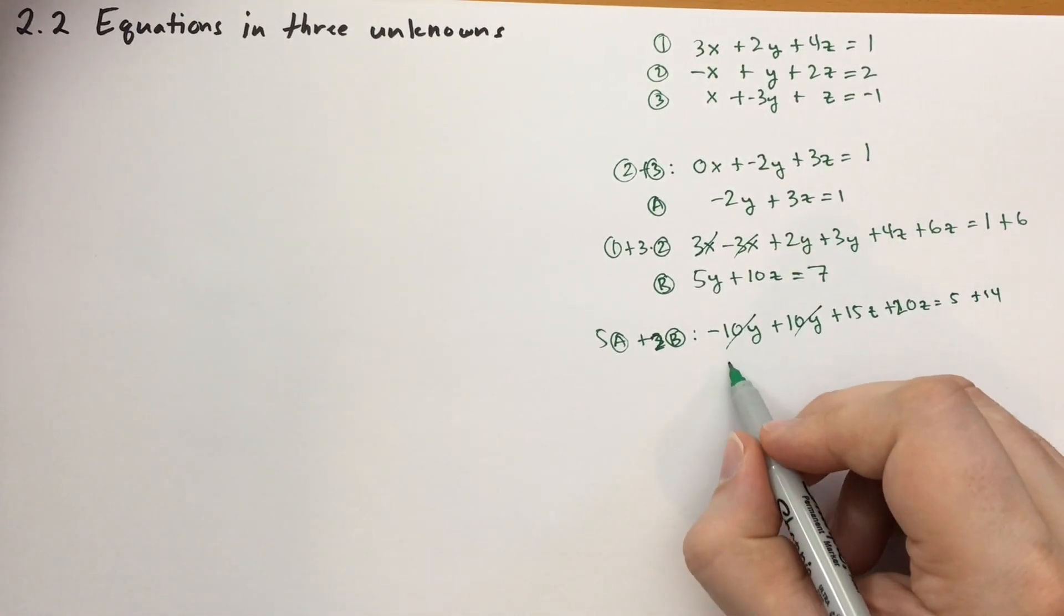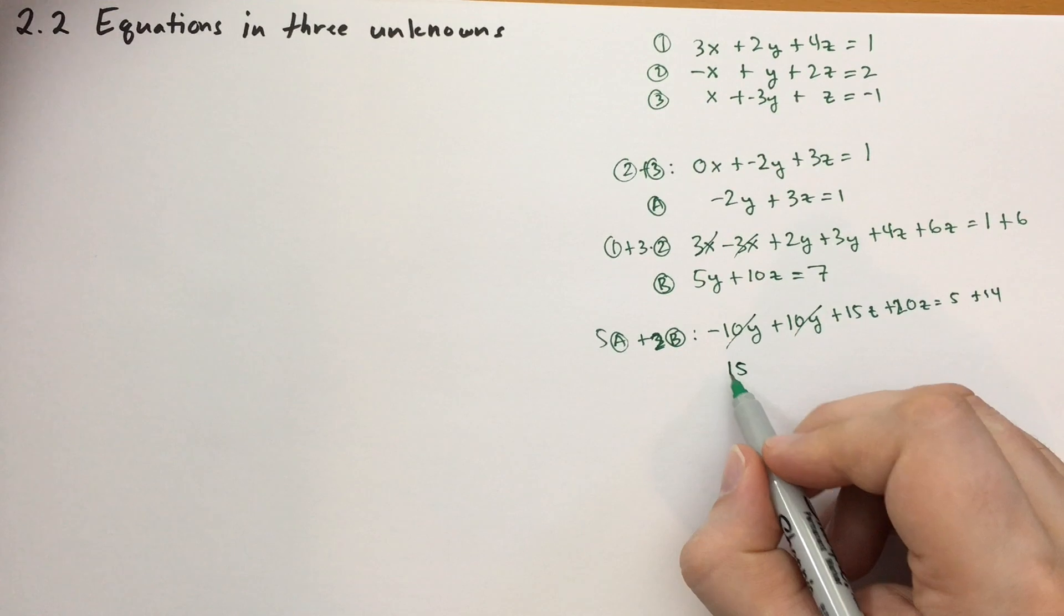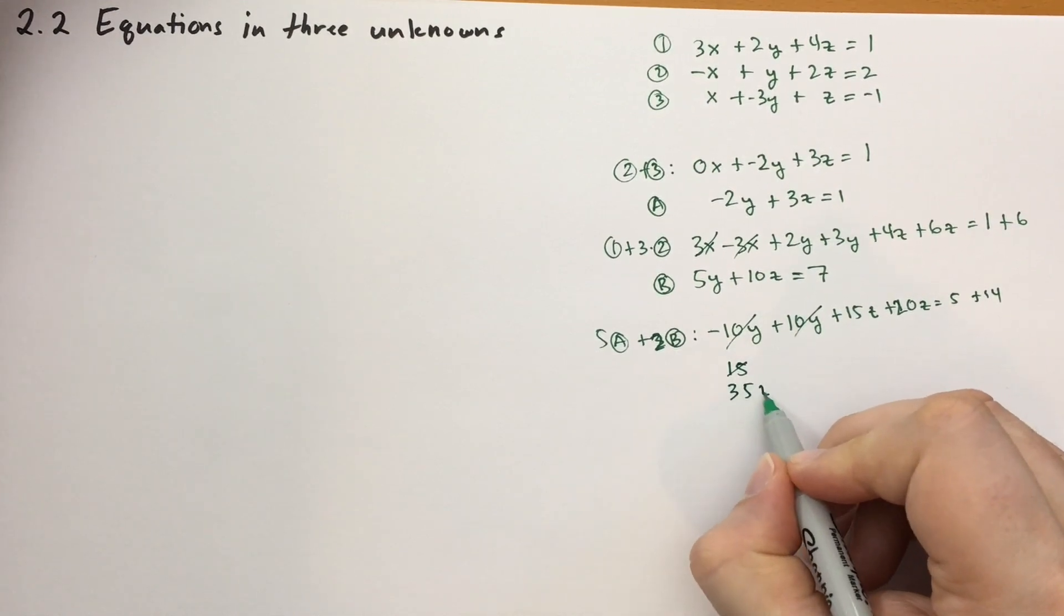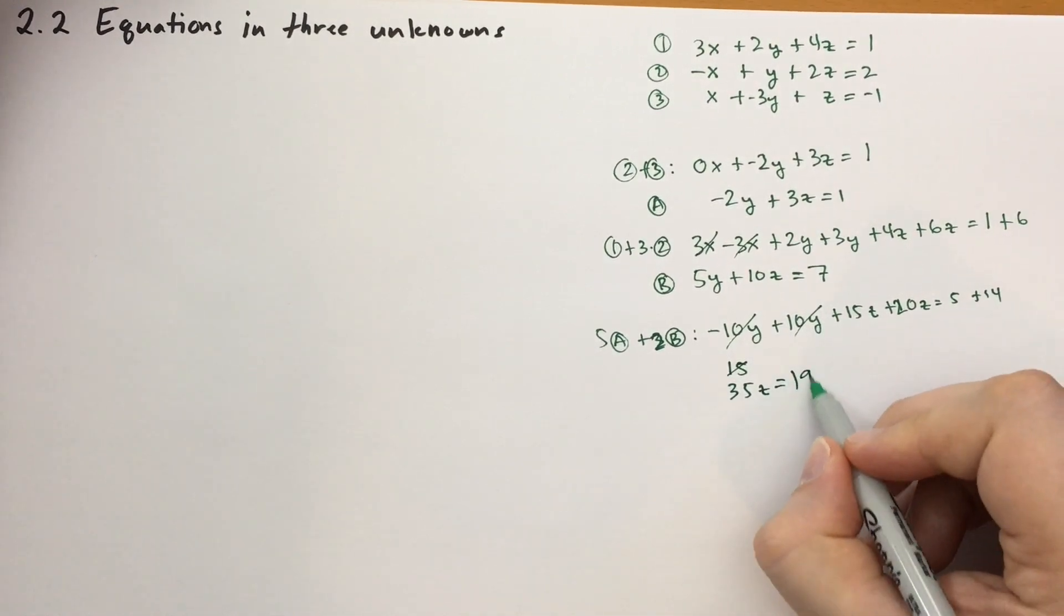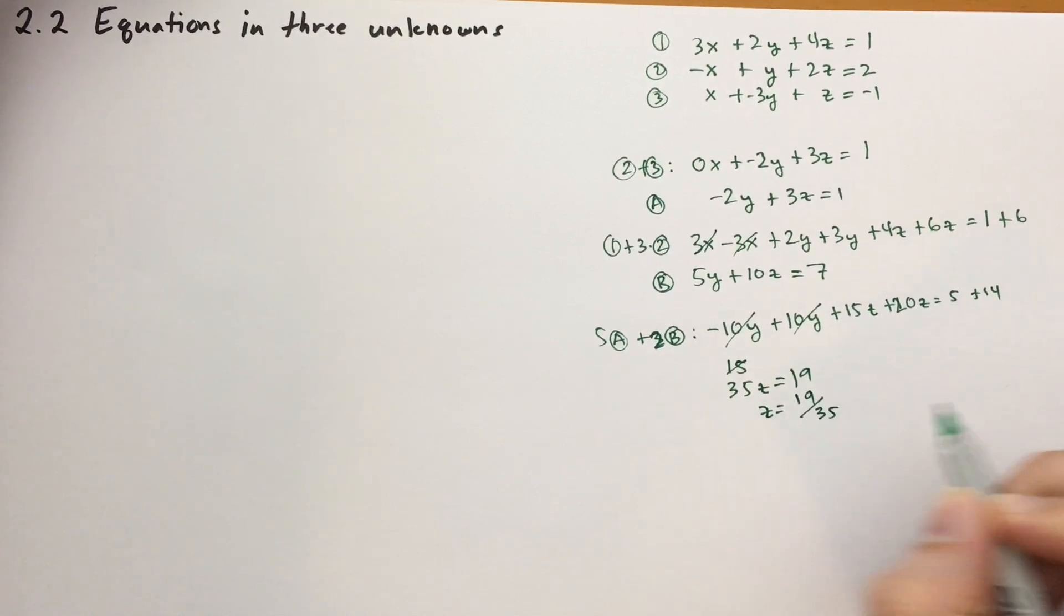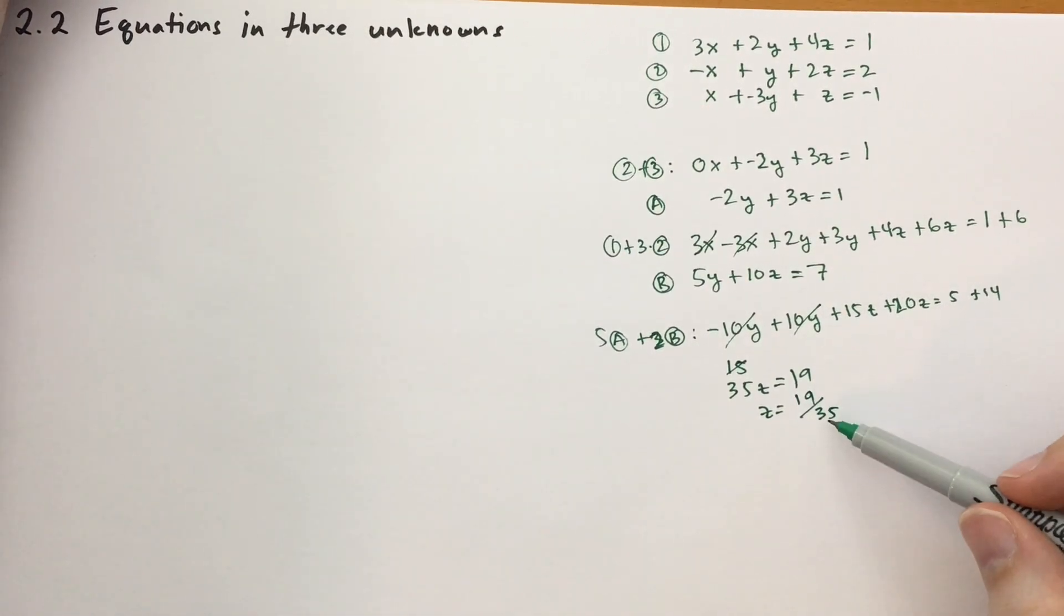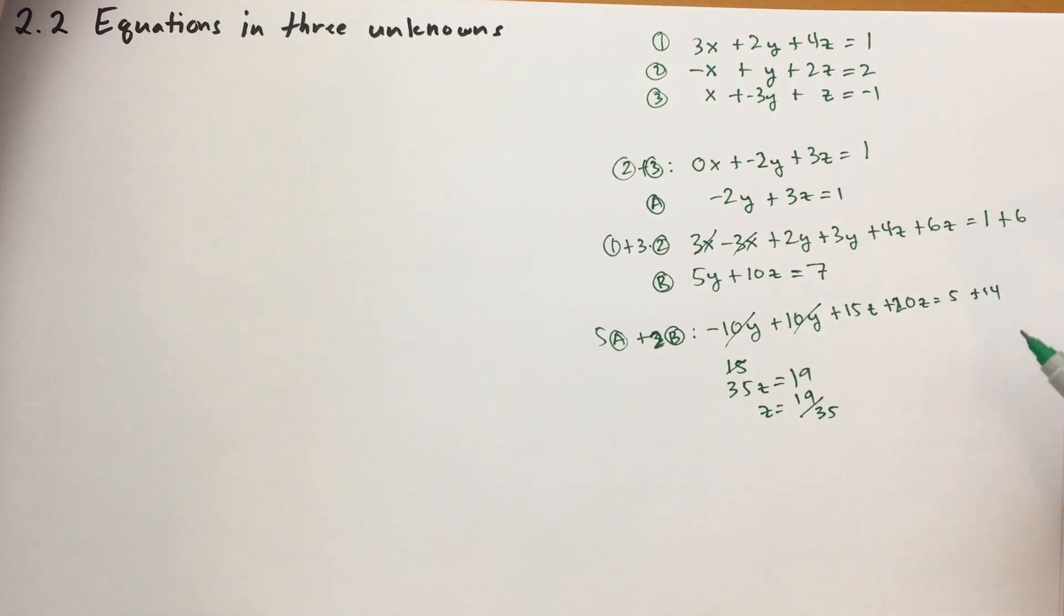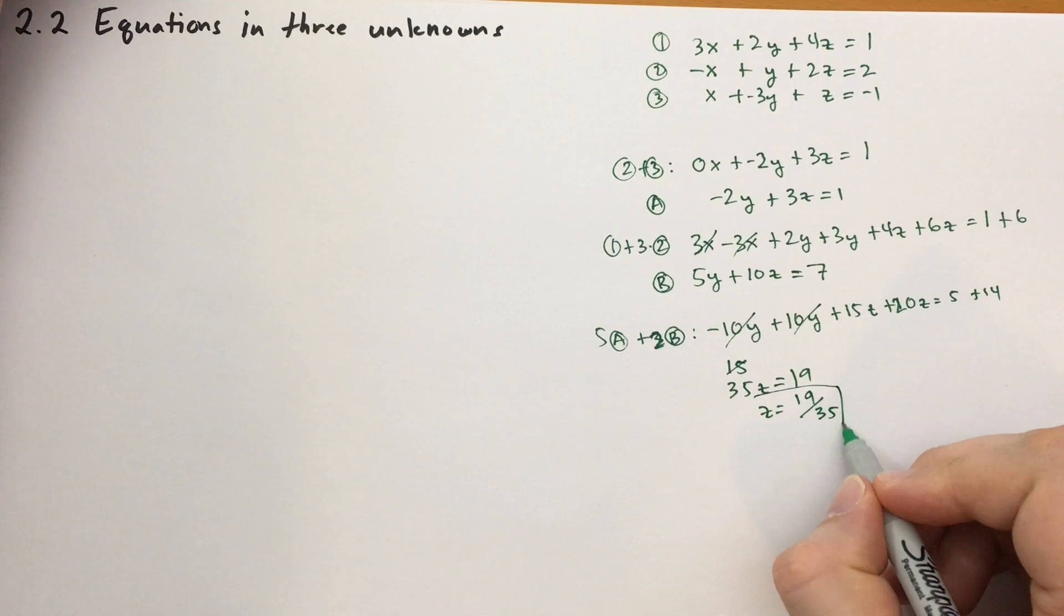So these two terms cancel. We get 15z plus 20z, so 35z. Let's write 35z is equal to 19, and we can move the 35 downstairs on the other side. 19 over 35. And 19 is prime, so it doesn't have any divisors, and 35 is 7 times 5. Okay. So we have z is equal to 19 over 35.